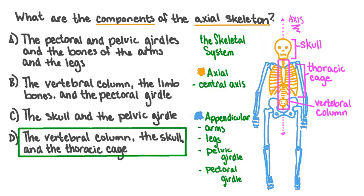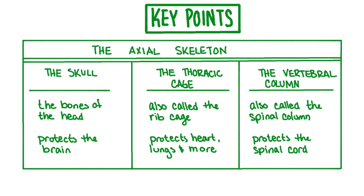Let's wrap up our lesson by reviewing what we've learned. In this video, we learned about the structure and function of the axial skeleton. The axial skeleton consists of the bones of the skull, which protect the brain; the thoracic cage, which protects the heart, lungs, and other vital organs; and the bones of the vertebral column, also called the spinal column, which protect the spinal cord.